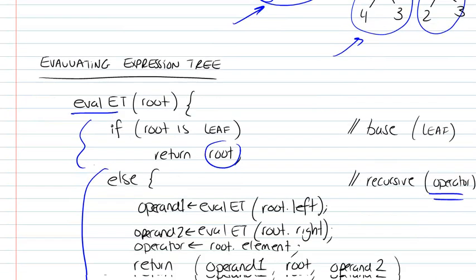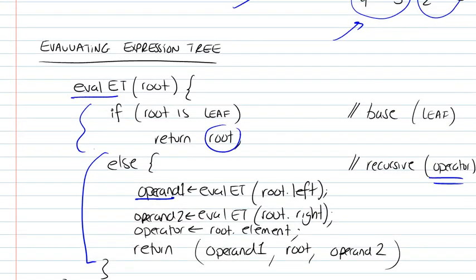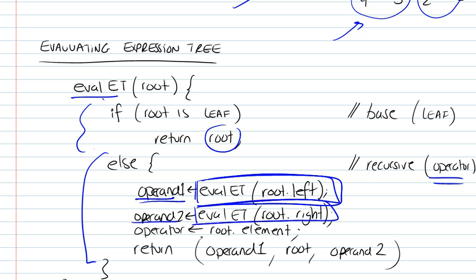And what we're going to do is we're going to get the operand as our left. We're going to first get the first operand by calling that function once more on the left child, get the second operand by calling that same function on the right child. The operator is the root element itself, and then we're going to evaluate this function.